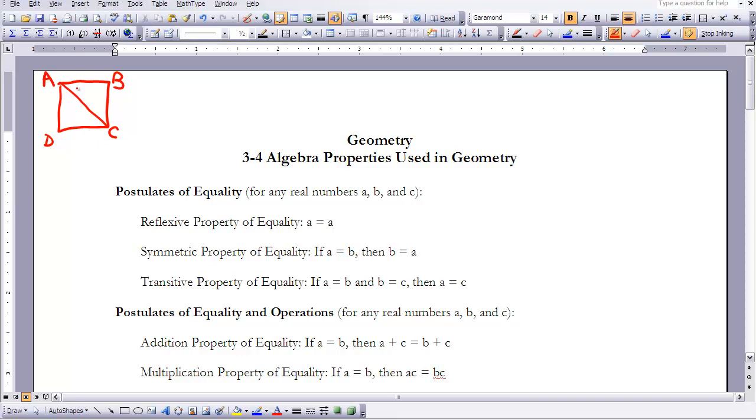The symmetric property allows us to say, if you solve an equation and you get 4 equals A, it allows us to just switch this around and say A equals 4.